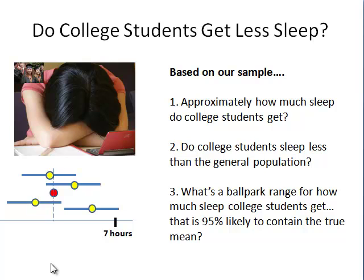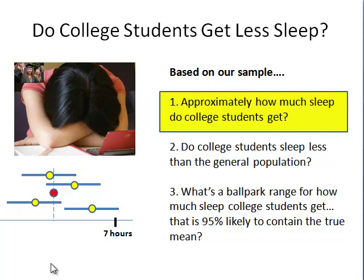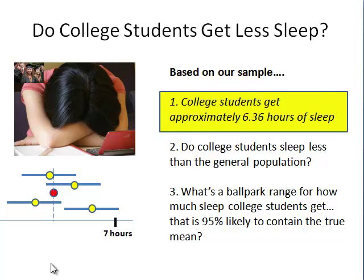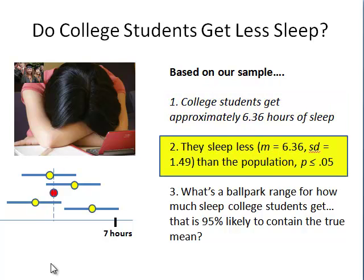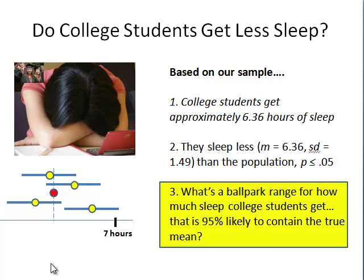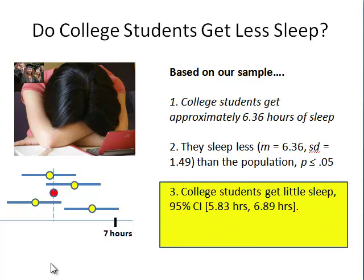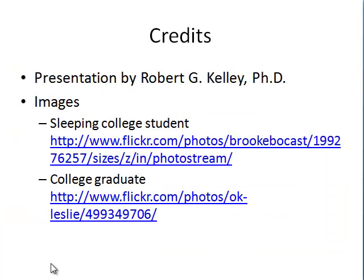We've looked at how SPSS can help answer our questions regarding whether college students get less sleep. Based on our sample, college students get approximately 6.36 hours of sleep. We concluded they sleep less than the general population, with p less than or equal to 0.05. And the 95% confidence interval for how much sleep college students get ranges from 5.83 to 6.89 hours, which is 95% likely to contain the true population mean.